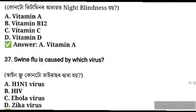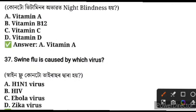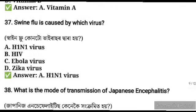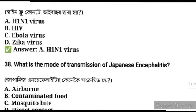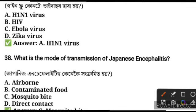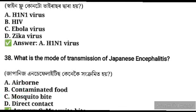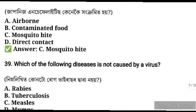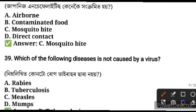Swine flu is caused by the H1N1 virus. Bird flu is caused by H5N2. What is the mode of transmission of Japanese encephalitis? Japanese encephalitis is transmitted by mosquito. Which of the following disease is not caused by a virus? Tuberculosis is not caused by a virus.